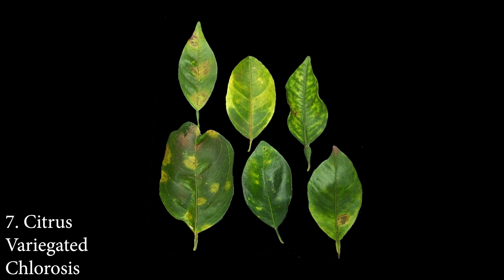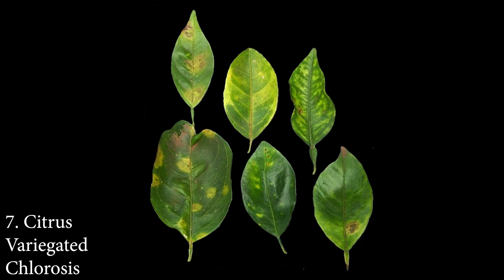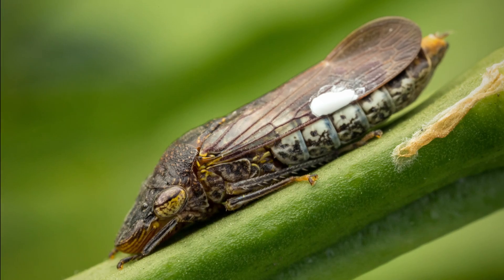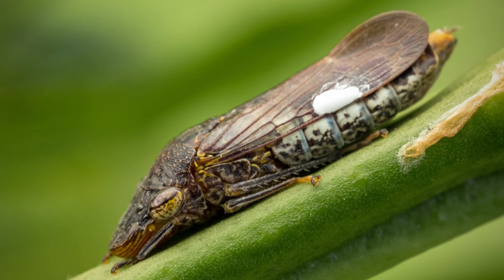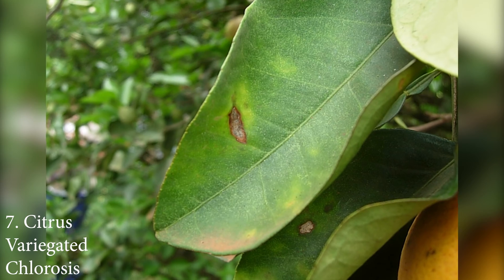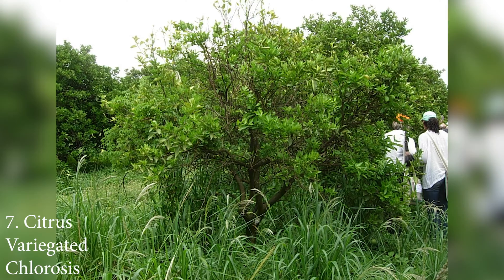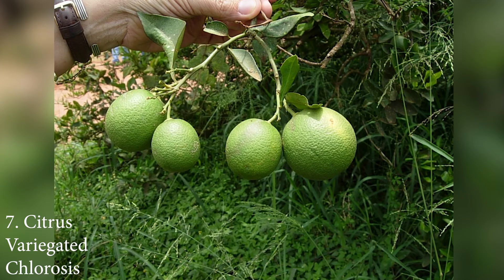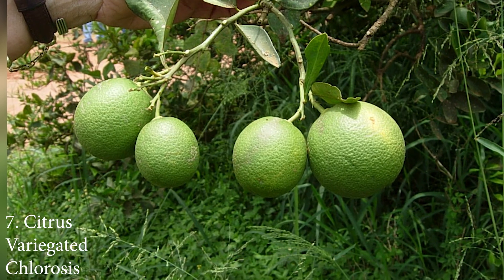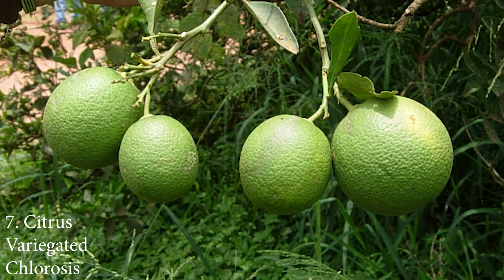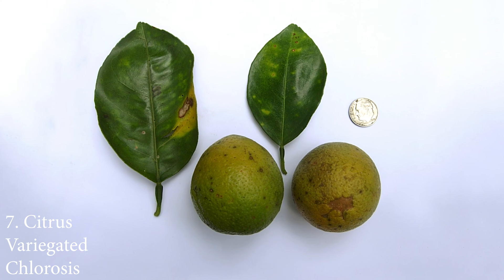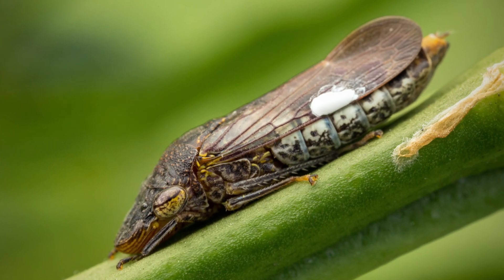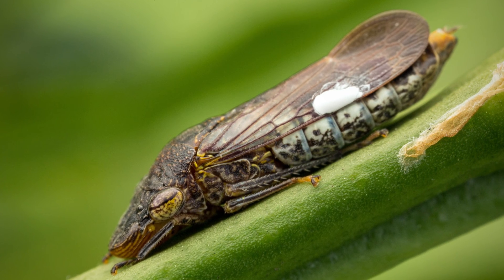Citrus variegated chlorosis is caused by a strain of the Xylella fastidiosa bacterium. The bacterium is spread by grafting and by sharpshooter insects present in California. Citrus variegated chlorosis is a significant problem in South America and causes citrus trees to become unproductive with small hardened fruits. In California, the strain of Xylella that causes citrus variegated chlorosis is not known to exist but could become problematic if introduced due to the presence of insect vectors.